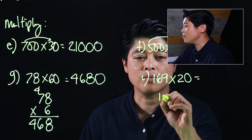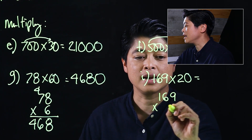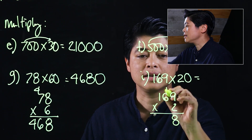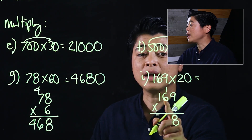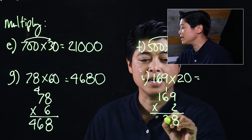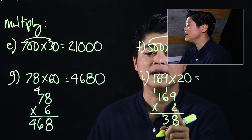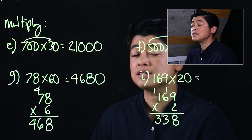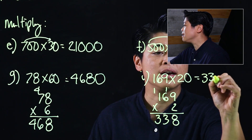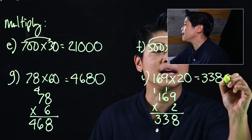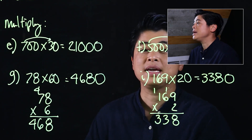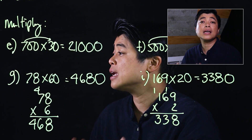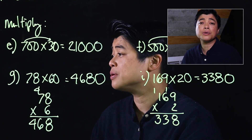Finally for this set, I can't do it mentally, so I'll take 169 times two. That gives 18 — carry the one; two times six is 12 plus one is 13 — carry the one; and then three. Our answer is 338, with an additional zero making it 3,380. The process when there are zeros is slightly different from when there are no zeros.